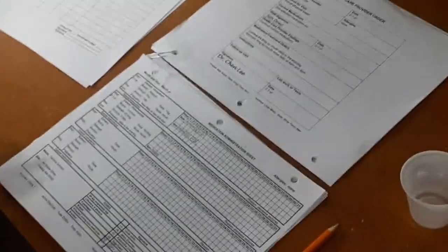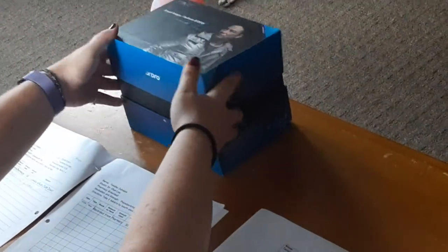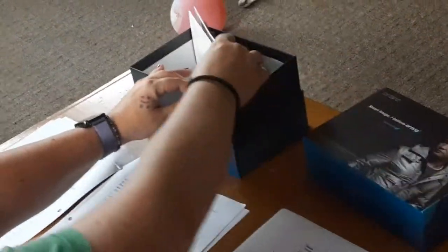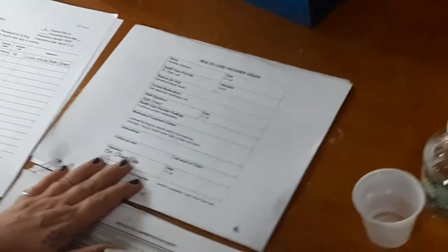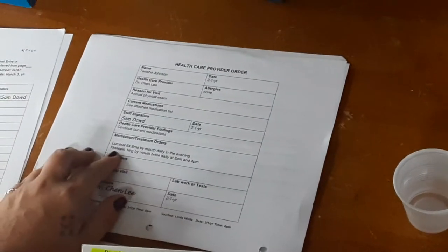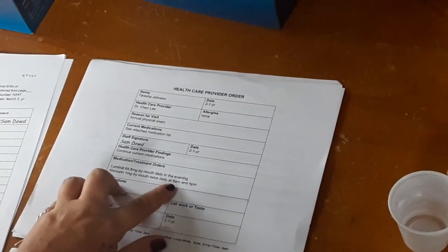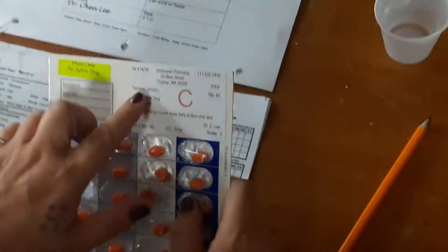Now I'm going to unlock the med cabinet and find Tanisha Johnson's clonazepam. Now I'm ready for check 1 between the HPC order and the pharmacy label. I see Tanisha Johnson, Klonopin, 1 milligram by mouth, twice daily, at 8 a.m. and 4 p.m.